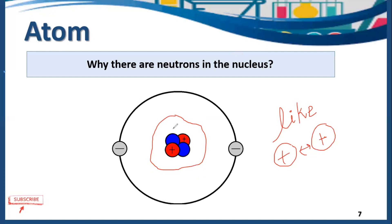When these two protons repel each other, they will damage the structure of the atom. So in this example, these two neutrons arrange themselves in a way that they come between the two protons. The neutrons act as a barrier, keeping the two protons apart. That is why neutrons are present inside the nucleus — in order to manage the repulsion between the protons.